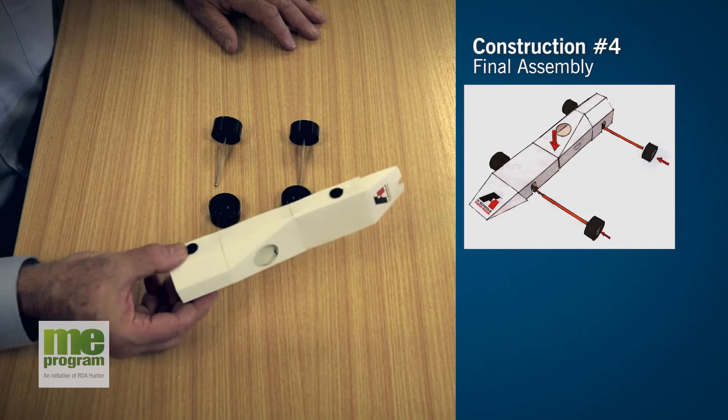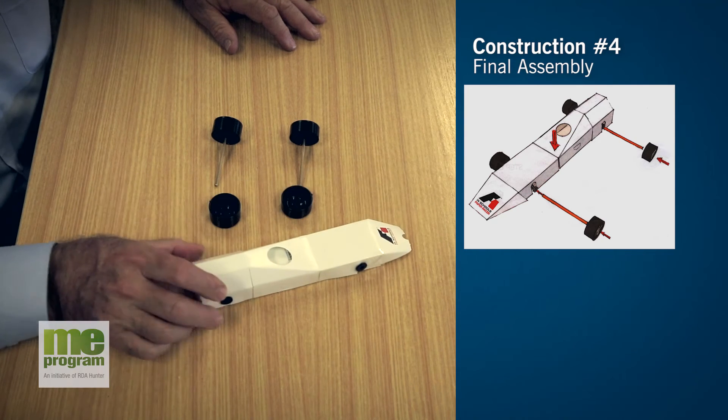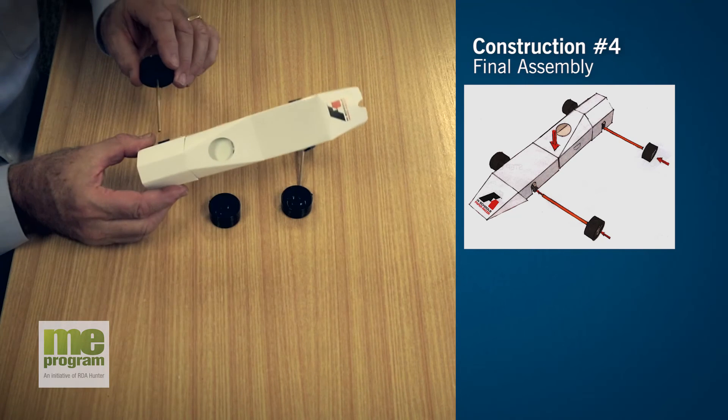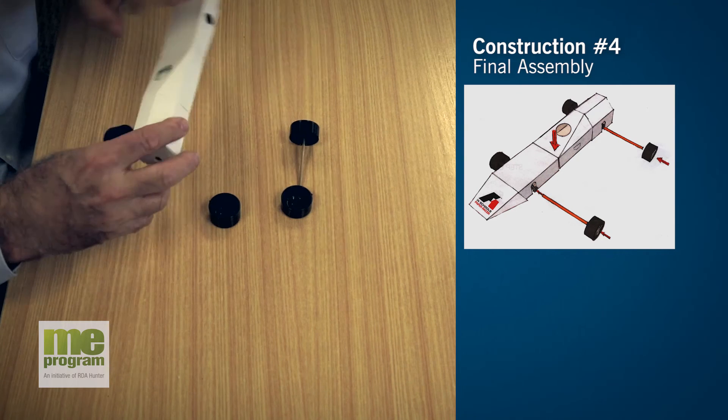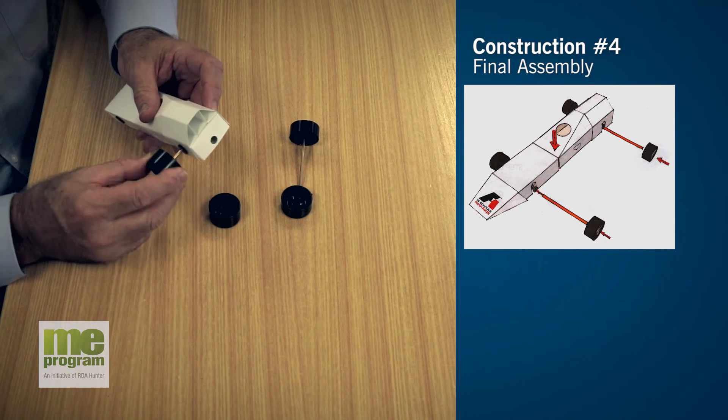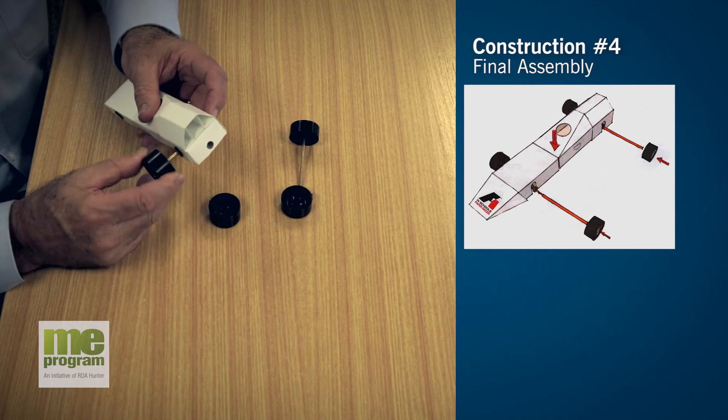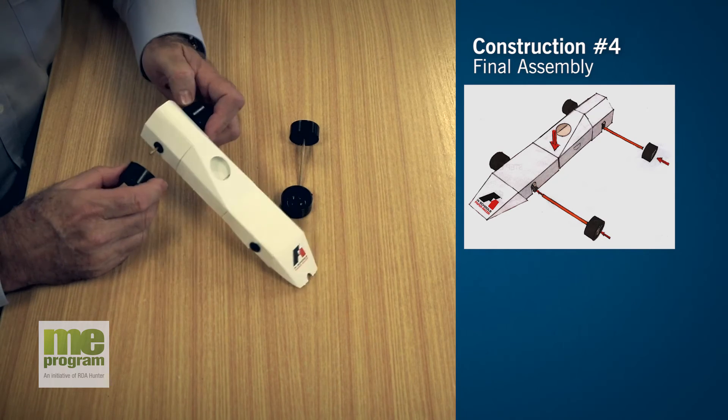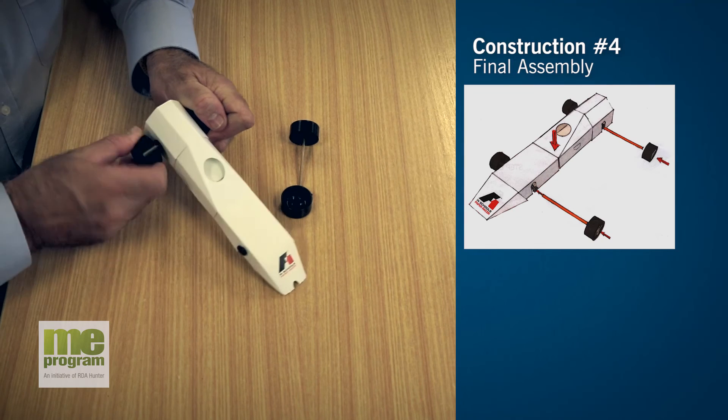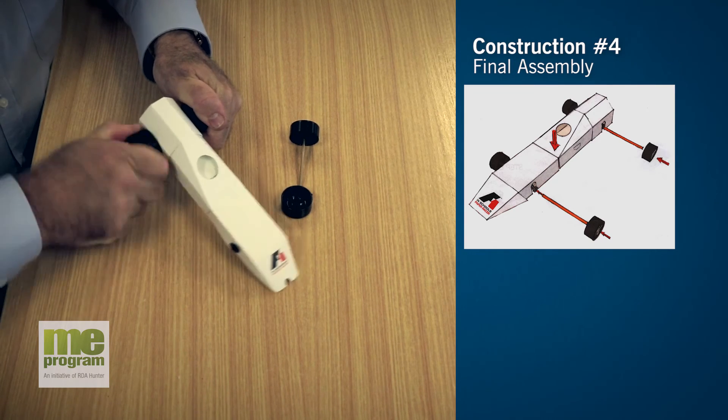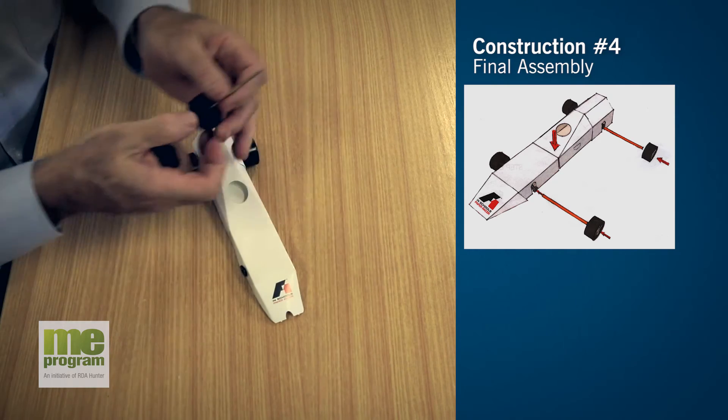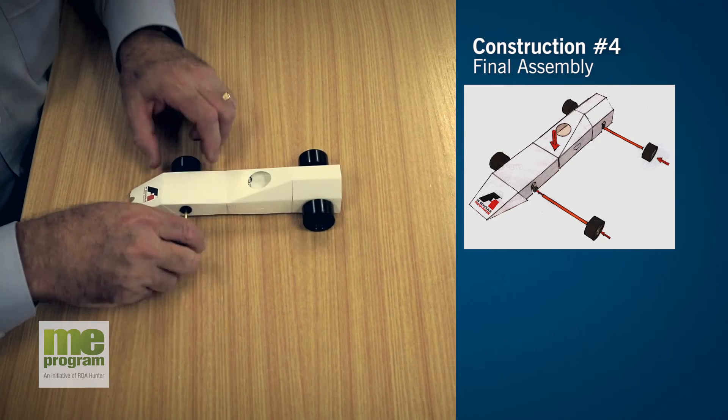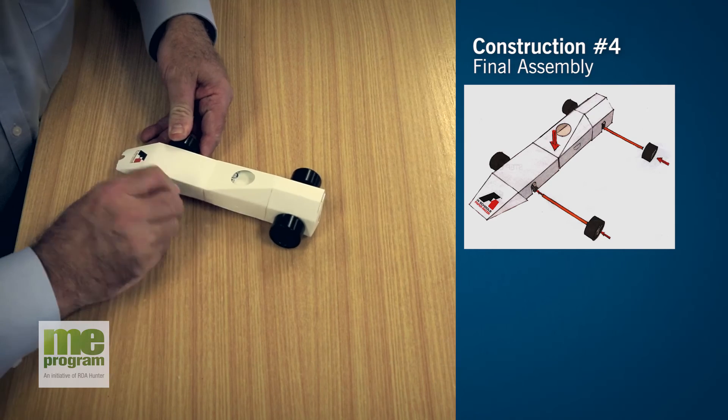So we have a body with the bearings in place. We have two skinny wheels for the front and two fat wheels for the back, and it's basically a matter of just assembling the axles through. And if you're quite dextrous, that happens straight away. If not, you can look inside. There we go. That's our rear wheels. Same again with the front wheels, which are a bit thinner.